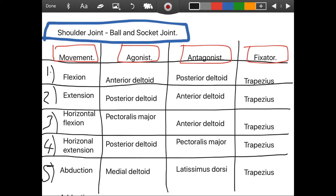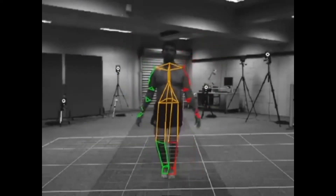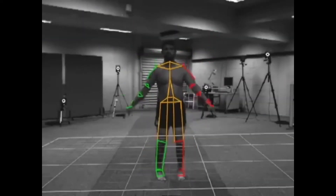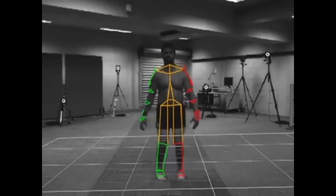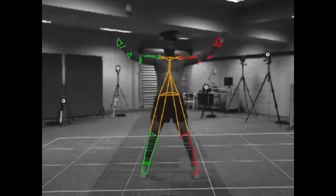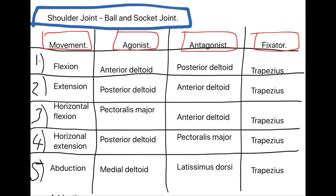The next pairing is abduction and adduction. The best example is a star jump — I used it in all my papers when this question came up and always got full marks. Abduction: imagine the outward phase of a star jump, moving your arms up and out. The agonist is the medial deltoid and the antagonist is the latissimus dorsi. For adduction, moving the arms back in towards the midline of your body, the agonist is the latissimus dorsi and the antagonist is the medial deltoid.